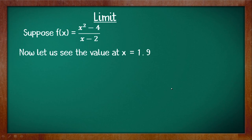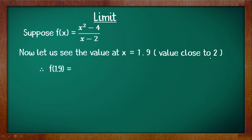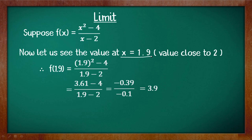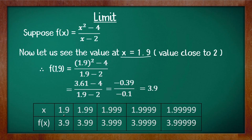Now let's check the value at x = 1.9. Previously we took x = 2.1, which was greater than 2. Here we take 1.9, which is less than 2 but still close to it. Replacing x with 1.9: (1.9² - 4) / (1.9 - 2) = (3.61 - 4) / (-0.1) = (-0.39) / (-0.1) = 3.9. So f(1.9) = 3.9.